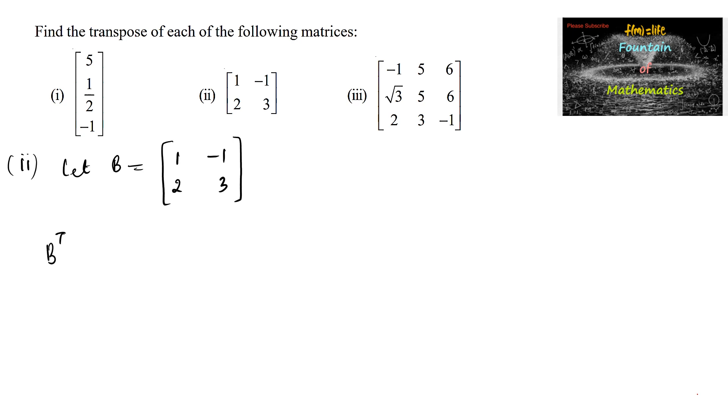Then transpose of the matrix B transpose is equal to, interchanging rows and column, first row will become first column. And the second row will become second column. So B transpose is equal to 1, 2, and minus 1, 3.